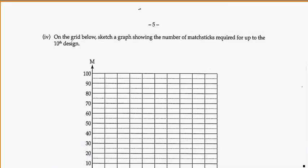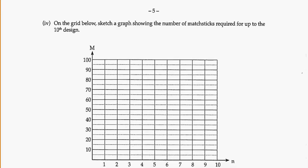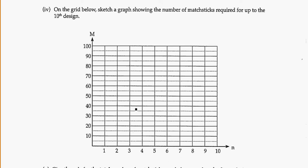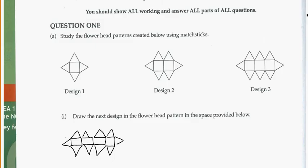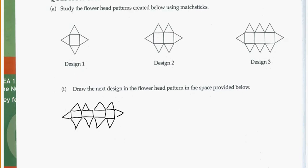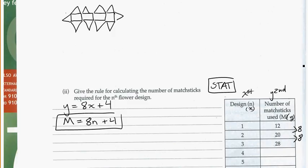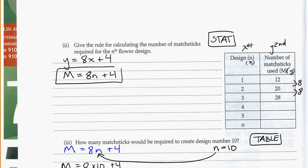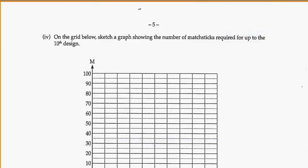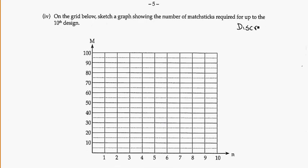On the grid below, sketch a graph showing the number of matchsticks required for up to the 10th design. So we need to put in the matchsticks on here. So let's think about this real quick. If we think about our pattern, can we have half a matchstick? Can we have half a pattern? Can we have 3 quarters of a matchstick or 3 quarters of a pattern? You should be answering no, we cannot. It needs to be a whole pattern, a full design made with full matchsticks. And that gives us information about what kind of graph we should make. So, we need to be using a discrete graph. So we're using little dots. And this is because we can only have whole numbers, must be whole numbers.